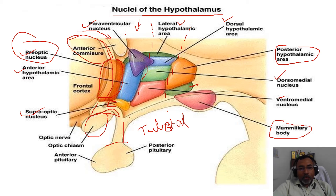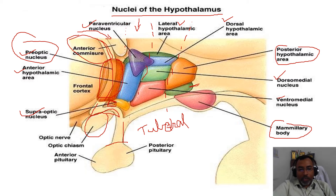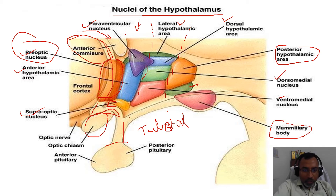After that, there is the supraoptic region. It is called supraoptic because the nuclei are situated above the optic chiasm. There are two important nuclei here: the supraoptic nucleus and the suprachiasmatic nucleus.